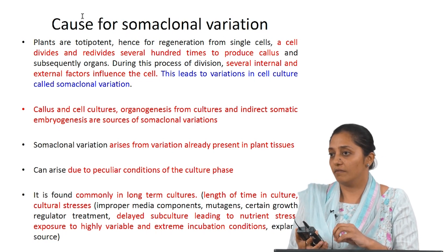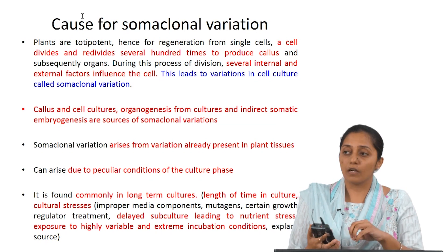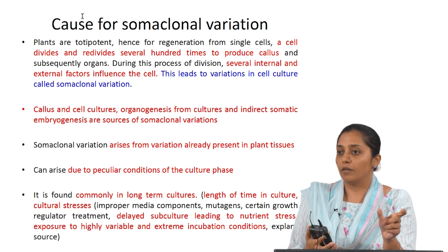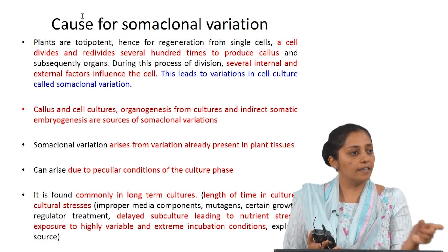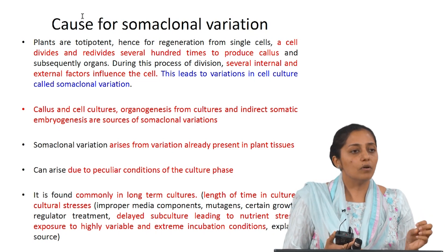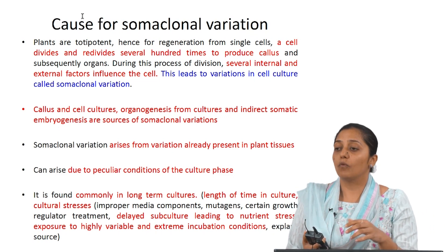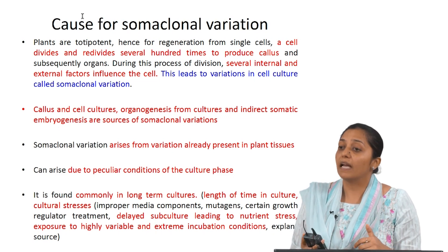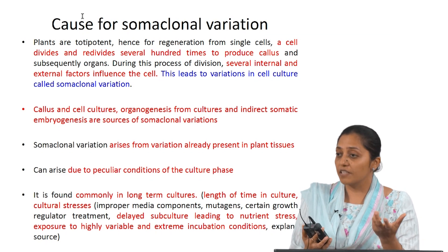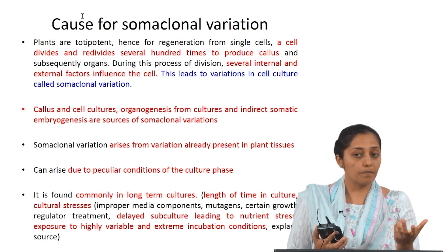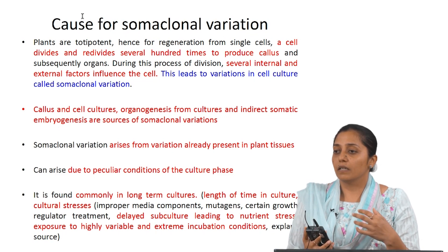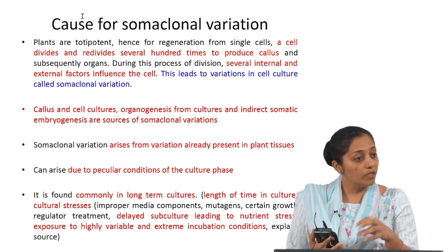There can be single gene mutations, or activation of transposon elements and different recombination events — these are gene elements which can change their relative position in the plant chromosome. This may happen because of many reasons. It depends on the genetic makeup of the explant used, the ploidy level of the explant used, and the culture conditions. Sometimes, if there are very high concentrations of phytohormones, that can also lead to this.